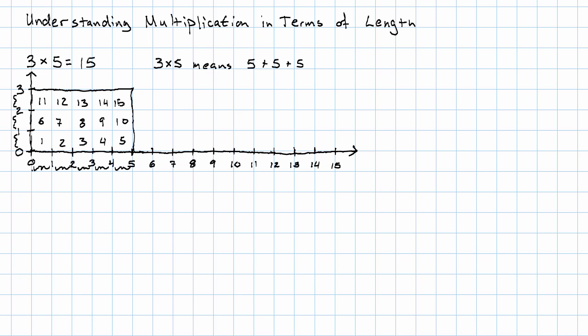We're counting, then, not unit lengths any longer with the 15. We're counting unit squares. When we multiply 3 unit lengths times 5 unit lengths, we get 15, not unit lengths, but unit squares.